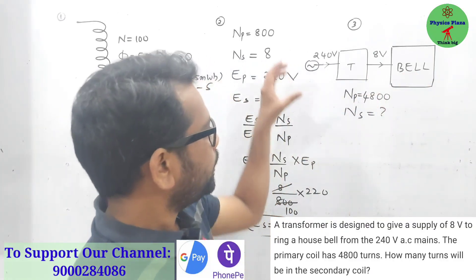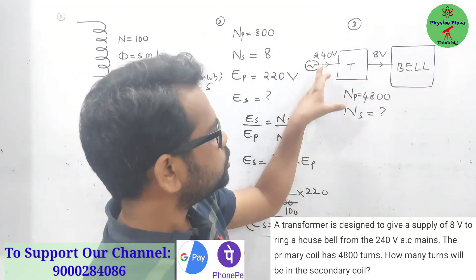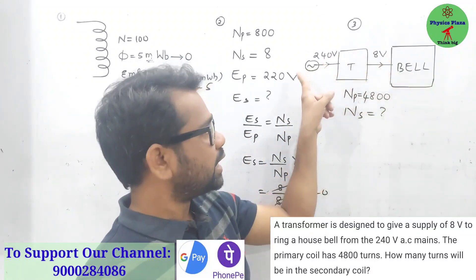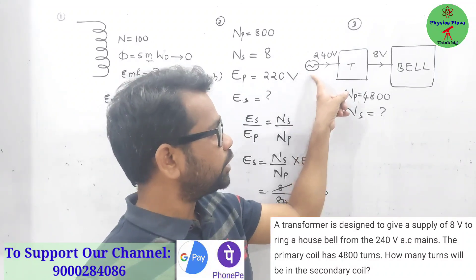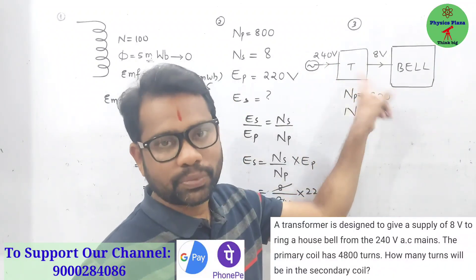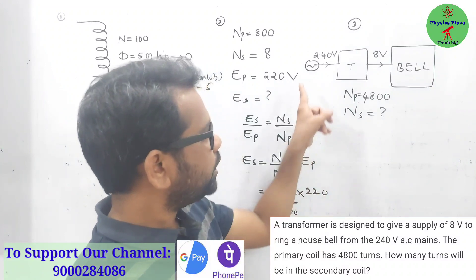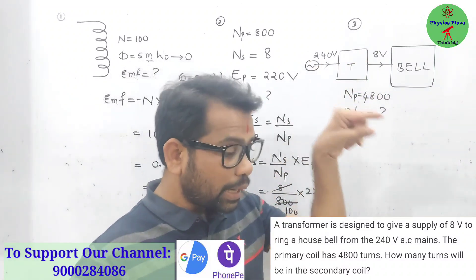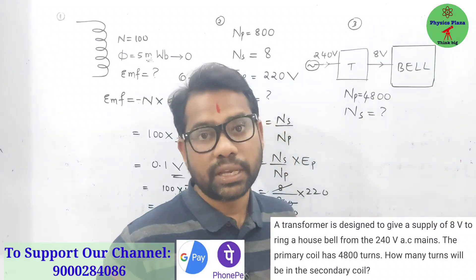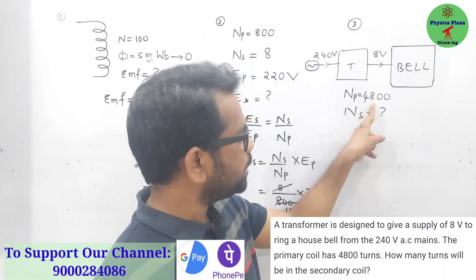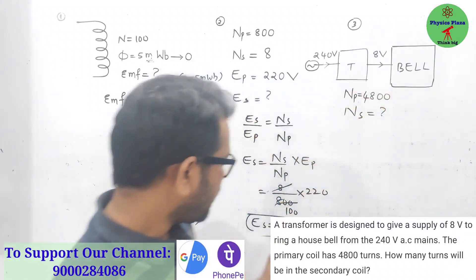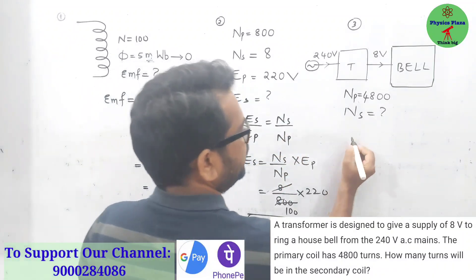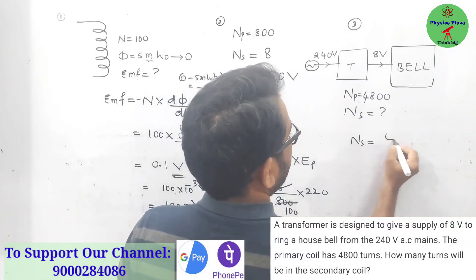Here is a transformer. This is a bell. The input voltage from the AC supply is 240 volt, but the electric bell needs 8 volt it seems. So it is converting 240 to 8, it's a step-down transformer. In order to decrease the voltage to 8 volts, what should be the number of turns in the secondary coil they are asking, if the number of turns in primary coil is 4800.